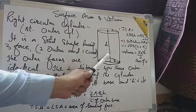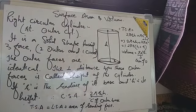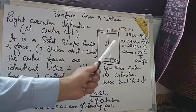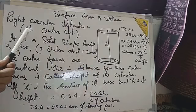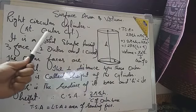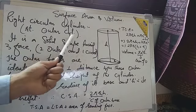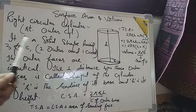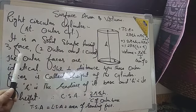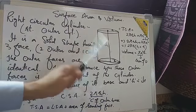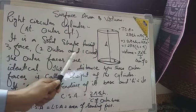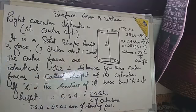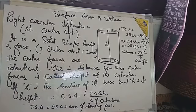The full name of the shape is right circular cylinder — we simply call it cylinder. It can be written as R.T. for right, C.I.R.C.U.L.A.R. for circular, and C.Y.L. for cylinder. The definition is: it is a solid shape having 3 faces — 2 circular and 1 curved. The circular faces are identical, meaning they are of the same diameter or same radius.